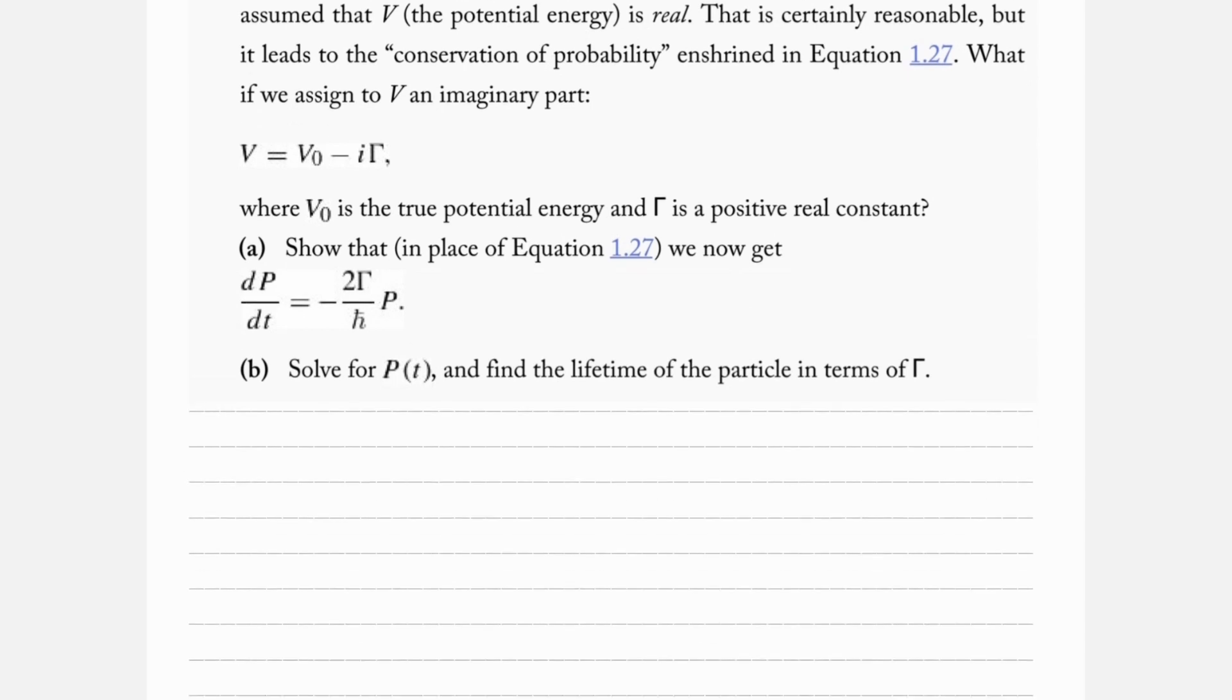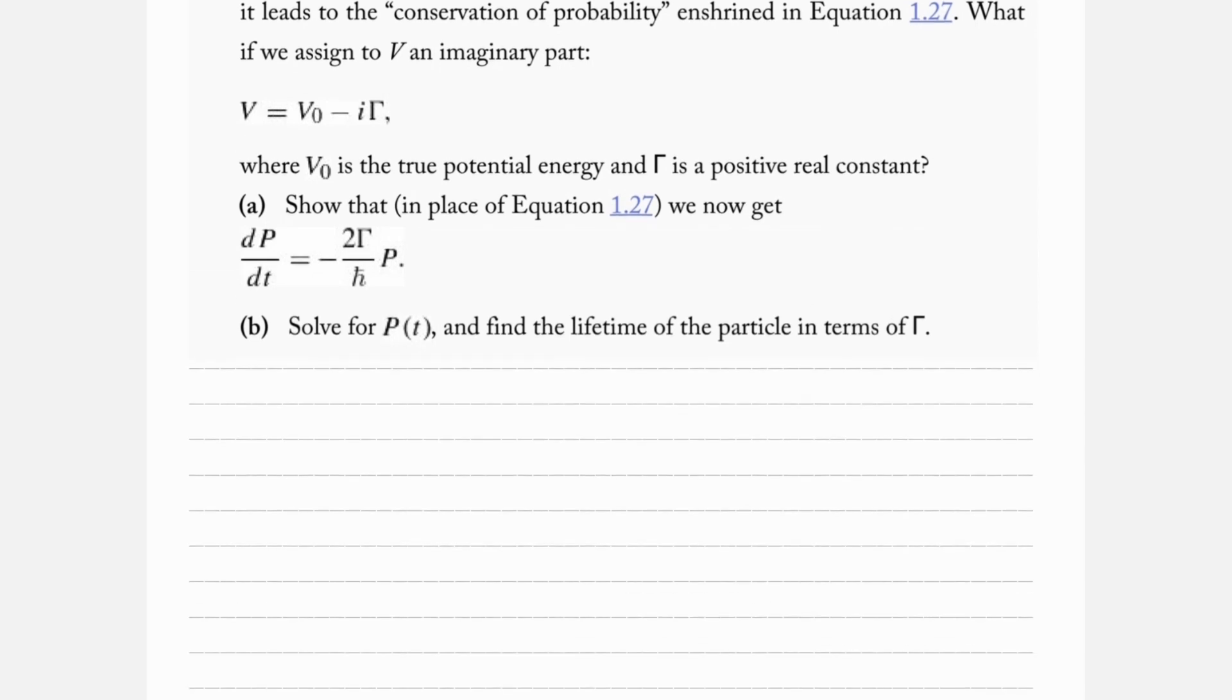Part (a): Show that we now get the time derivative of the probability is equal to minus 2γ over ℏ bar times the probability.